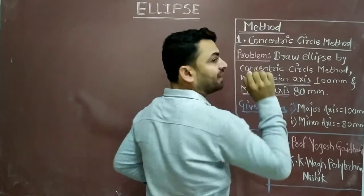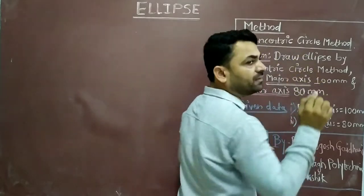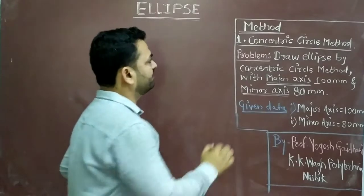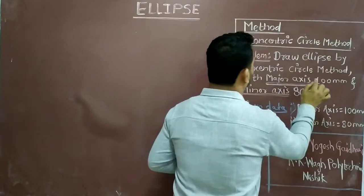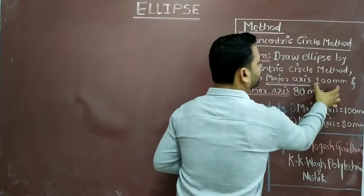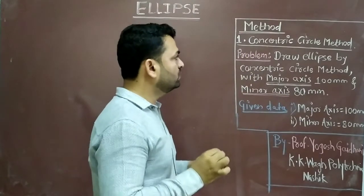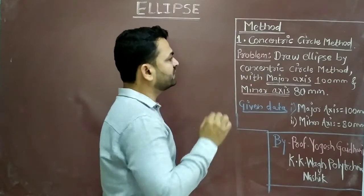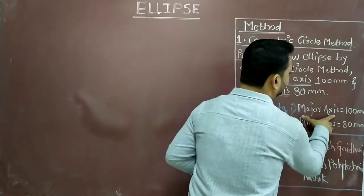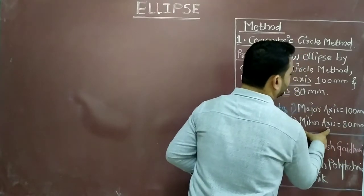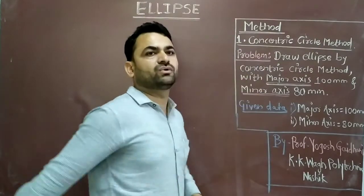The method with the help of which we are going to draw the ellipse — the first method we are going to see is the concentric circle method. The problem will be given to you in the final exam like this: draw an ellipse by concentric circle method with major axis 100 mm and minor axis 80 mm. Two important things are given: major axis equal to 100 mm and minor axis equal to 80 mm.